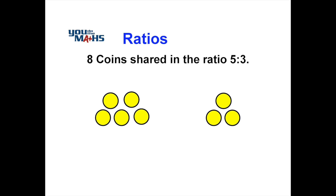There's eight coins there so we can easily group those into one group of five coins and one group of three. We can see we split them up in the ratio 5:3.